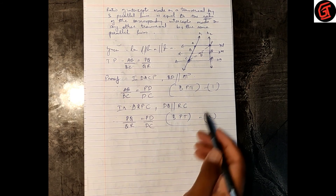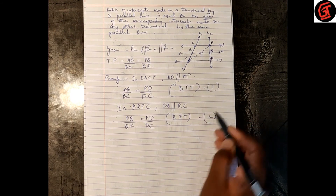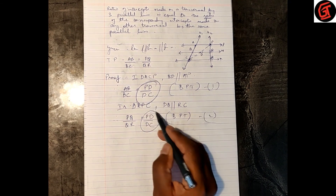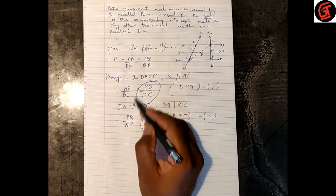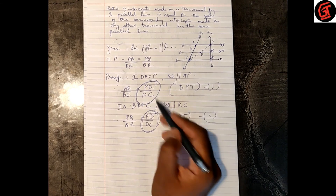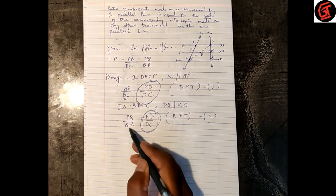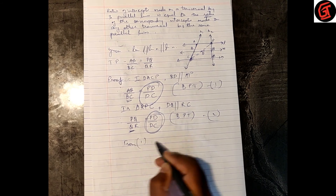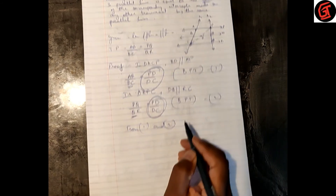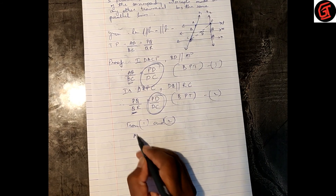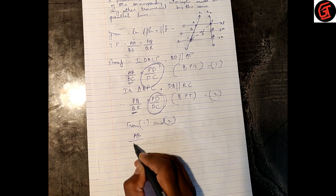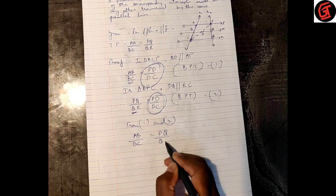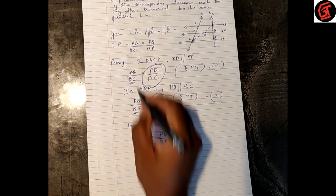From statements 1 and 2, the right-hand sides are the same — both equal PD upon DC. So the left-hand sides are also equal. Therefore AB upon BC is equal to PQ upon QR. Hence proved.